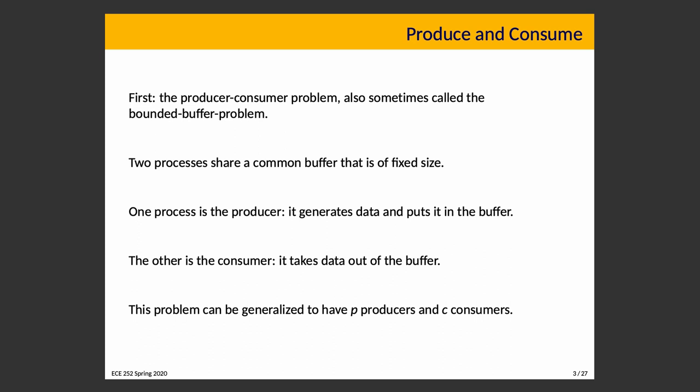One process is the Producer: it generates data and puts it in the buffer. What does it mean to generate data? It could be reading data from a file, taking input from a user, generating random numbers, or measuring temperature outside. As long as it makes something, it produces data. In some contexts — Java function pointers is one — the Producer is sometimes called the Supplier, but these terms are equivalent.